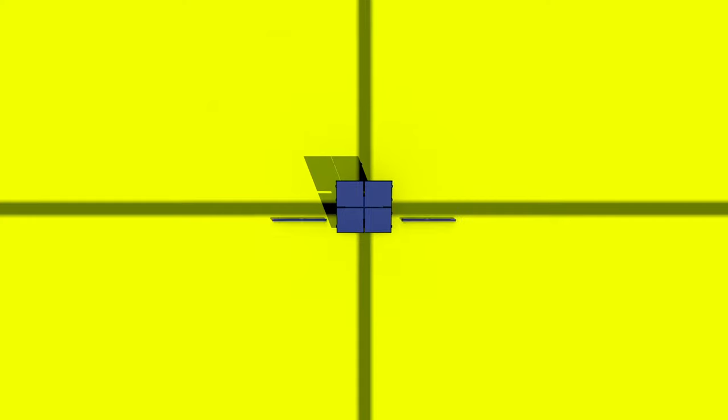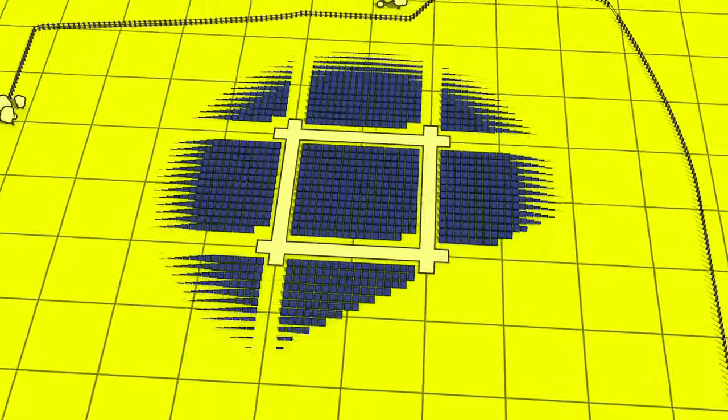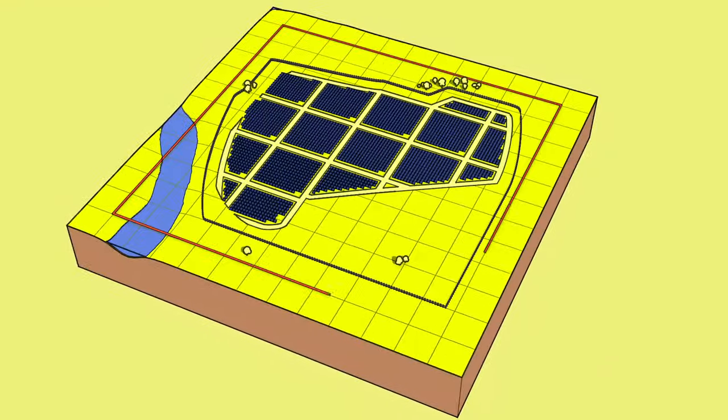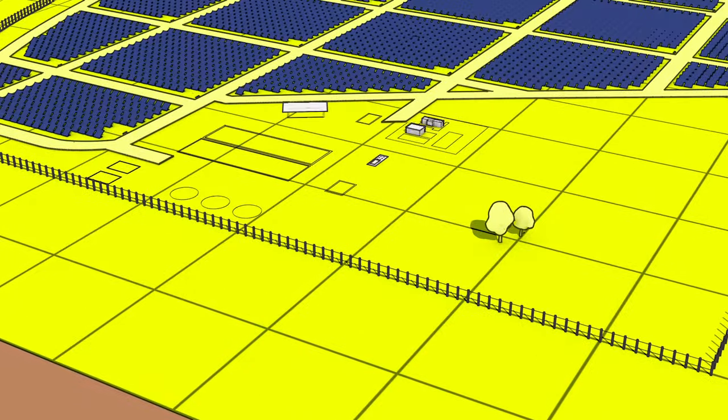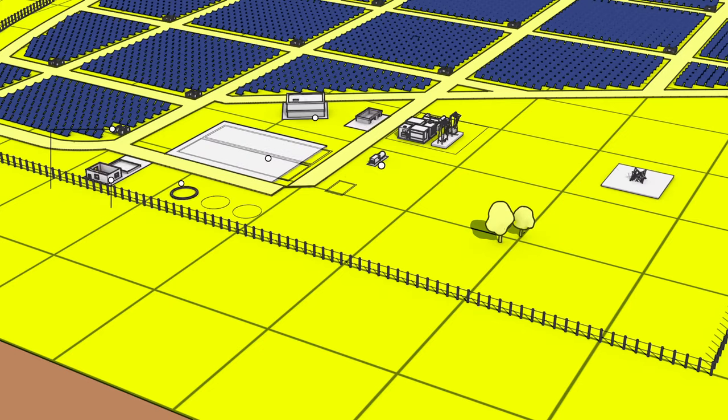A solar PV farm needs land and lots of it. Apart from land area for the panels, the farm also needs space for additional buildings such as inverters and transformers.